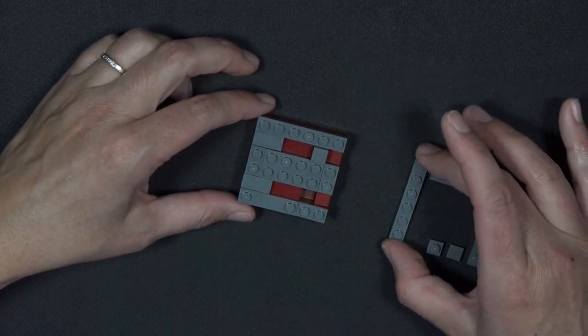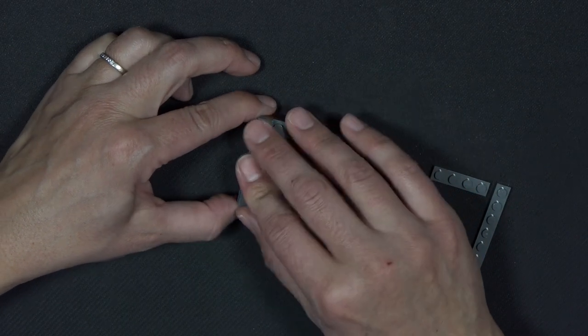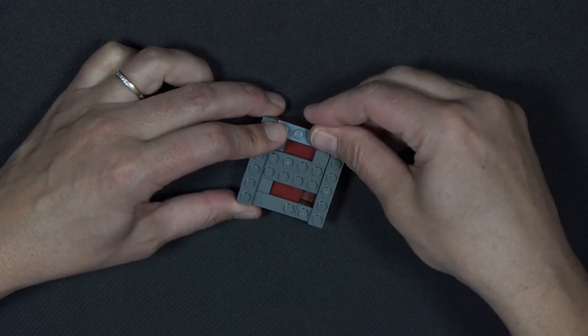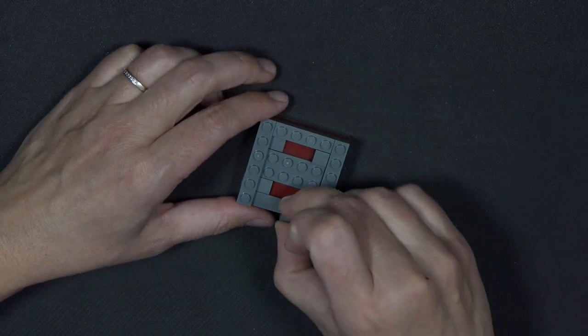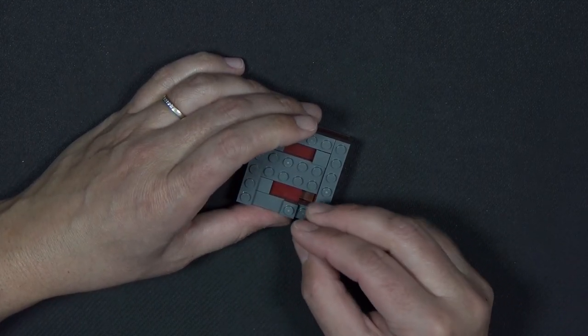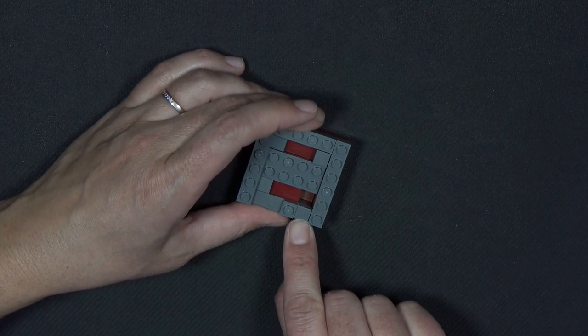And then I have a 1x6 plate. I actually have two of those, one on each end, a 1x4 plate there, and a 1x1 here. This one is a plate, and this one here is a tile.